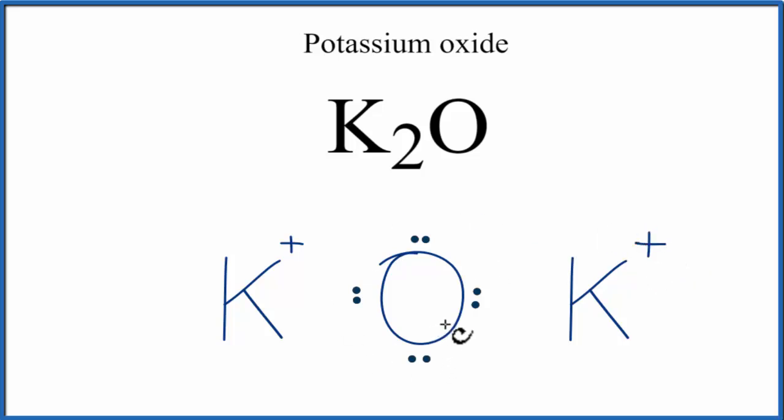The oxygen has gained two valence electrons. And in doing so, it now has an octet, eight valence electrons. This is considered a full outer shell. Because it's gained two electrons and electrons are negative, it now has a two minus charge.